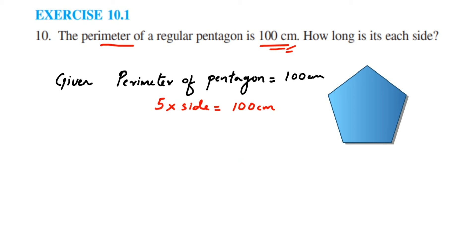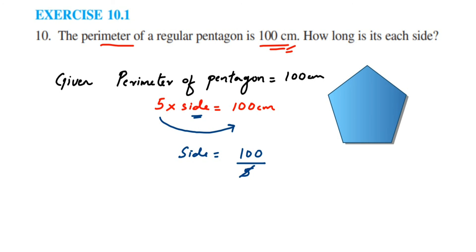In case you have learned how to transpose a number from the left side to the right side, you can use that method — solving it like an equation. Since I have to find the value of side, I'll transpose 5 to the other side. Since 5 is in multiplication, when transposed it comes in division. So side equals 100 divided by 5. Cancelling, we get 20 centimeters.